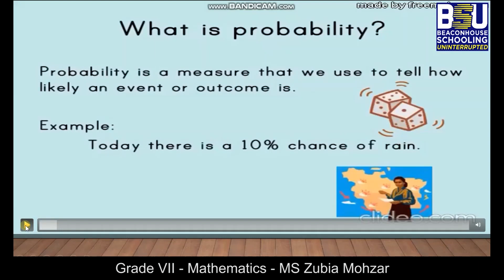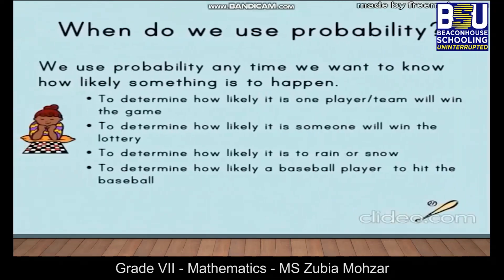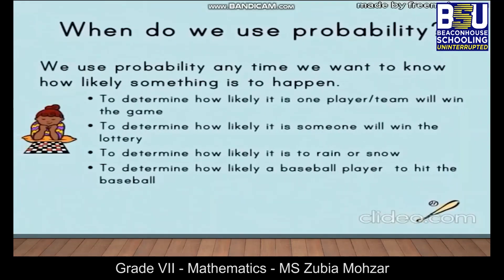What is probability? Probability is a measure that we use to tell how likely an event or outcome is. We use probability anytime we want to know how likely something is to happen.